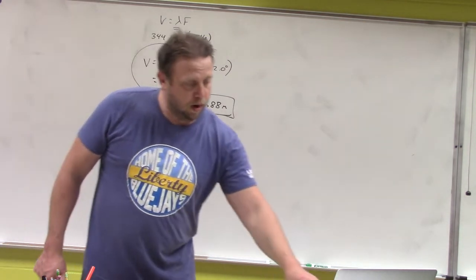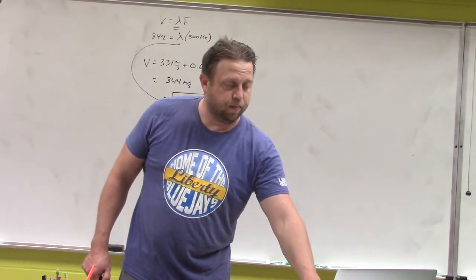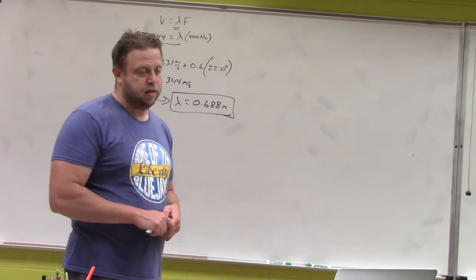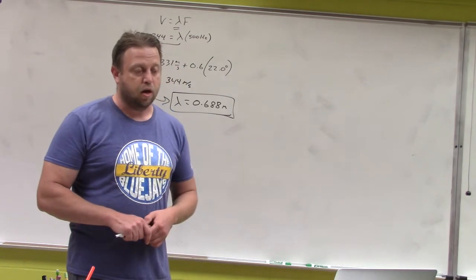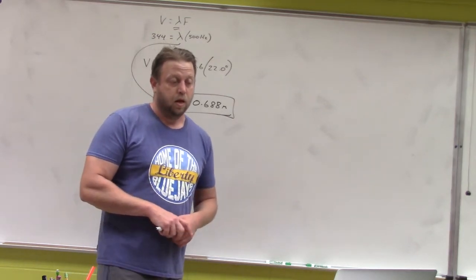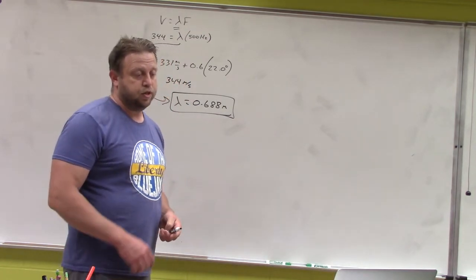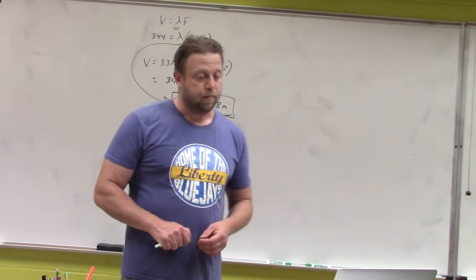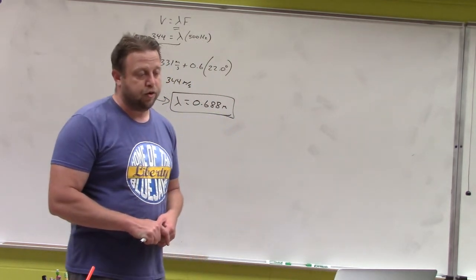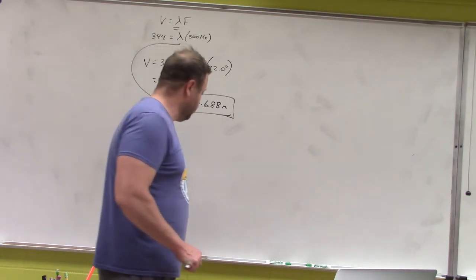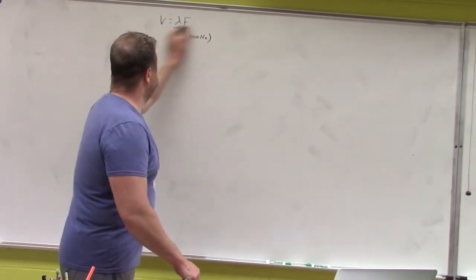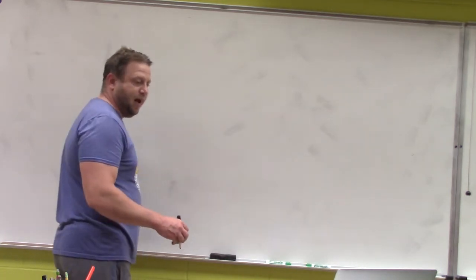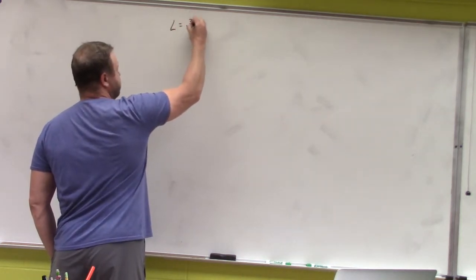Moving on to the speed of a wave on a string. A stringed instrument has a length of 80 centimeters and plays at the third harmonic frequency — we'll discuss fundamentals, harmonics, and overtones tomorrow. The frequency is 240 Hz. The string has a linear mass density of 30 grams per meter, and we want to find the tension in the string. Based on the diagram, we have three halves of a wave, so the length equals three-halves lambda.